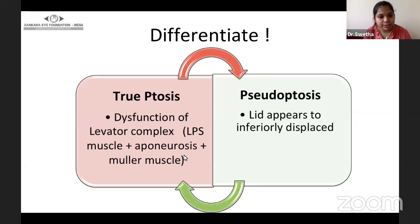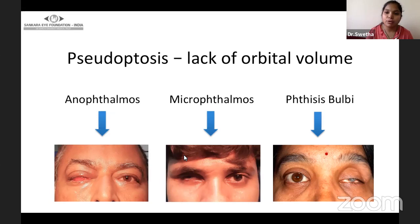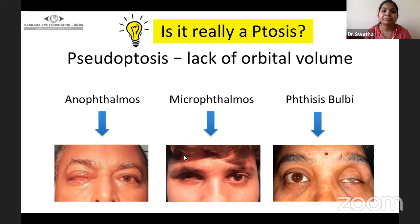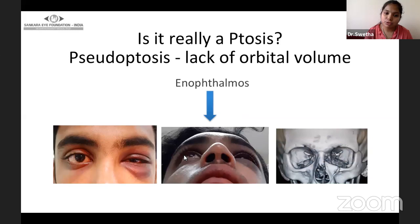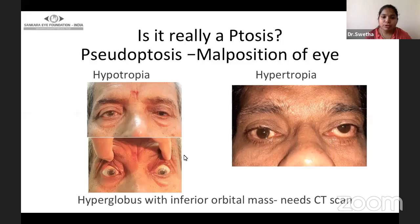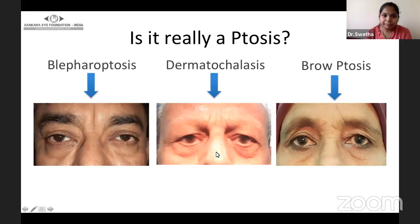It is very important to differentiate true ptosis — due to dysfunction of the levator complex — from pseudoptosis, which is the false illusion of the lid appearing to be inferiorly displaced. Lack of orbital volume due to enophthalmos, microphthalmos, and phthisis bulbi are the most common causes for pseudoptosis. Post-traumatic enophthalmos also gives the appearance of pseudoptosis. It is very important to document any malposition of the eye, as hypotropia is often associated with ptosis.